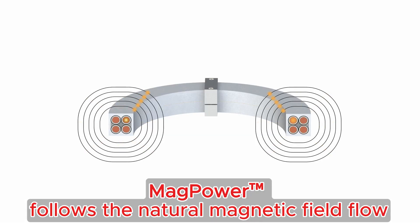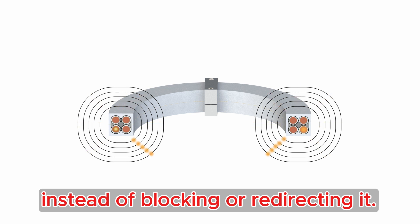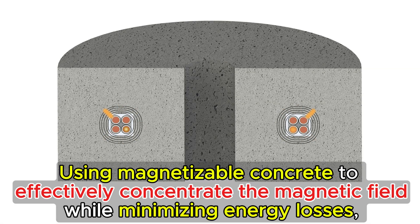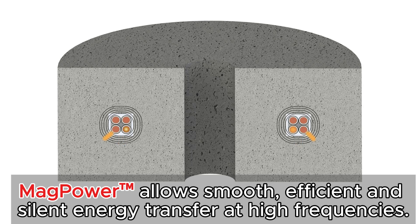MagPower follows the natural magnetic field flow instead of blocking or redirecting it. Using magnetizable concrete to effectively concentrate the magnetic field while minimizing energy losses, MagPower allows smooth, efficient, and silent energy transfer at high frequencies.